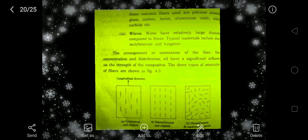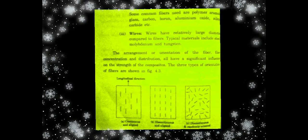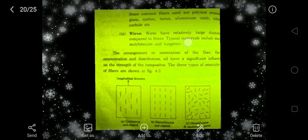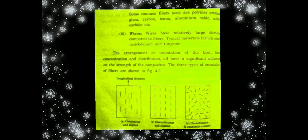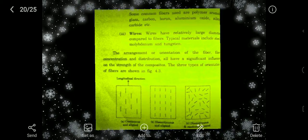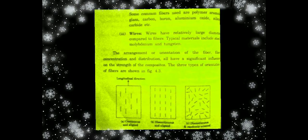Wires have a relatively large dimension compared to fibers. Materials used in wire form include steel, molybdenum, and tungsten. The orientation of the fiber has a significant influence on the strength of the composite. Fiber orientation may be continuous, discontinuous, or random — in random orientation, all fibers are in different directions.